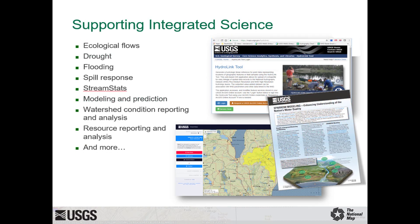NHD and other hydrographic datasets support numerous science applications at the USGS and other organizations. These include ecological flows, drought, flooding, spill response, stream stats, modeling and prediction, watershed condition reporting and analysis, resource reporting and analysis, and more. In addition, NHD serves as the national network and database for surface water features. All National Map data are available in the public domain for users outside the USGS.